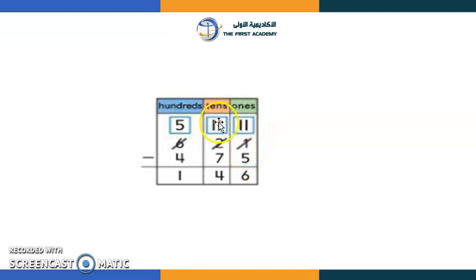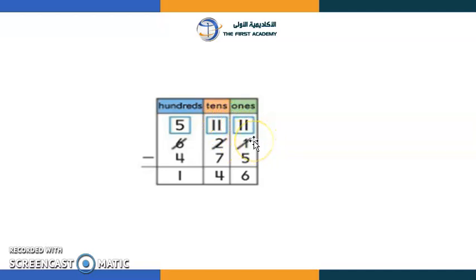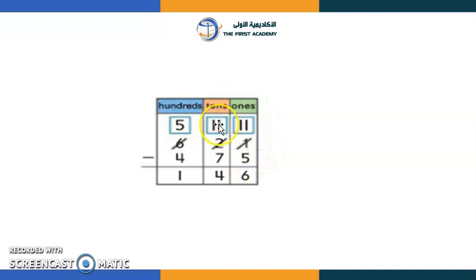Remember the poem: 'More on the floor, we need to go to the next door and ask for ten more.' So if the top number is smaller, we need to borrow from the tens place to make it greater than the number on the bottom.